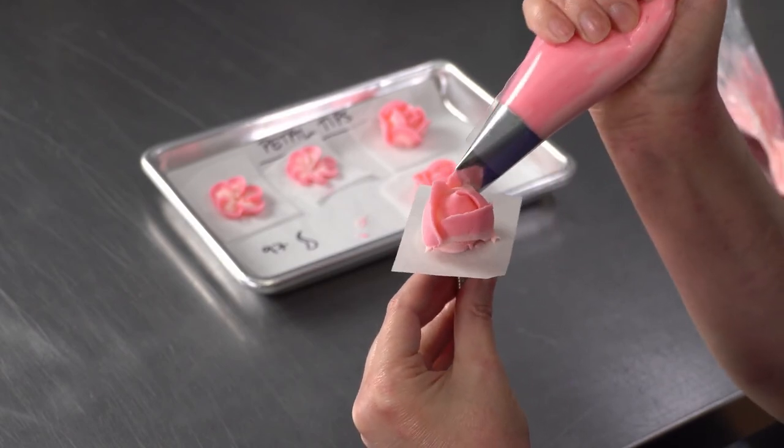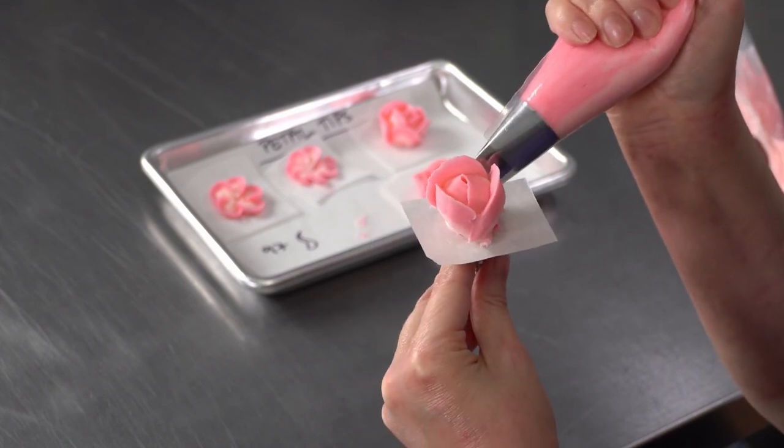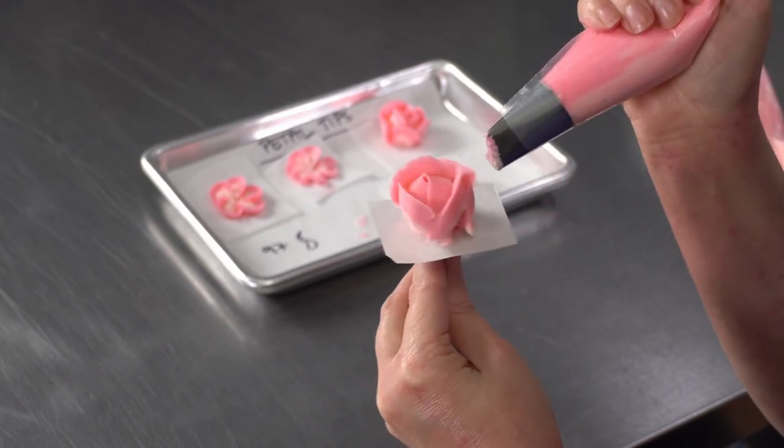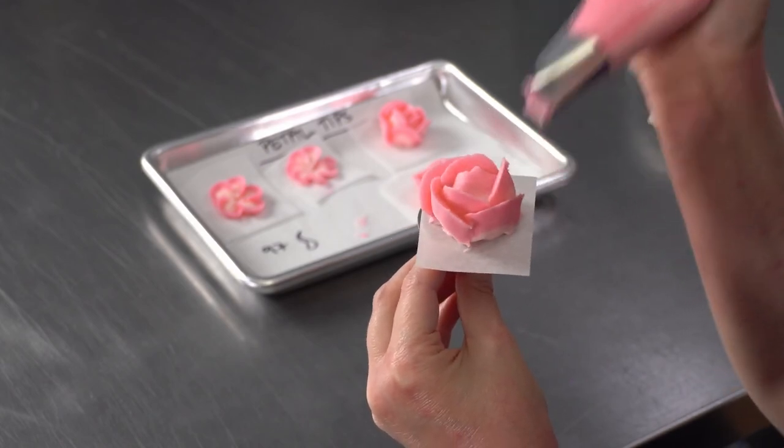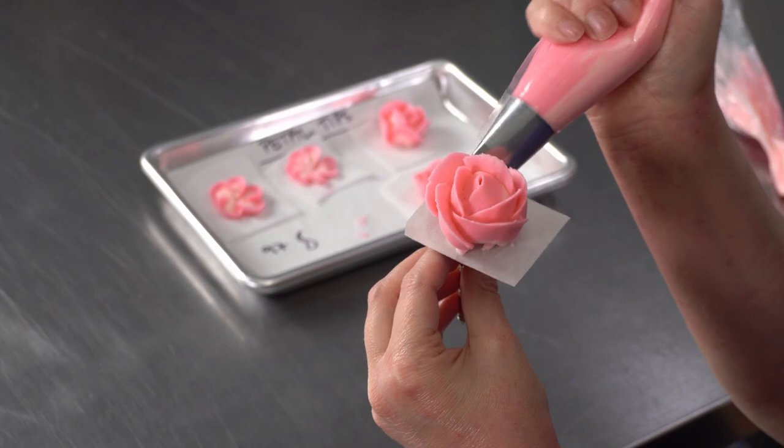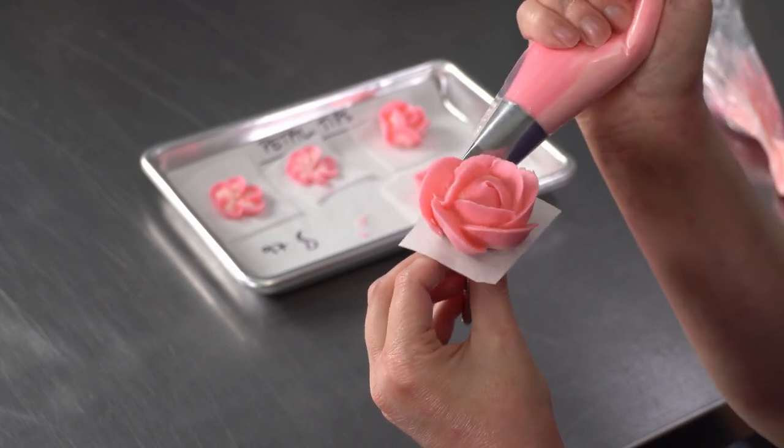You end up with a much bigger flower so you can always mix up the size of the tips that you're using when you're piping to create more variety.